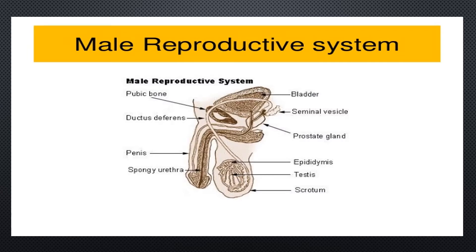Male reproductive system: the male reproductive system organs include the pubic bone, which you can see here. There is also the ductus deferens, which is connected from the seminal vesicle towards the scrotum, then the penis, spongy urethra through which you excrete urine, bladder, seminal vesicle, prostate gland, epididymis — which is located in the testes — and the scrotum. I will tell you the functions of all these structures later.